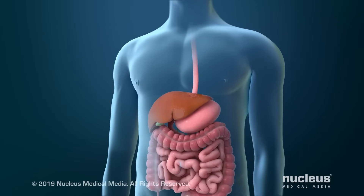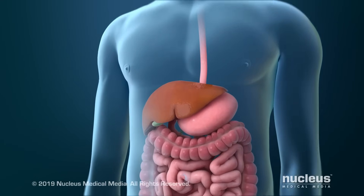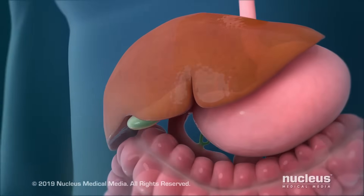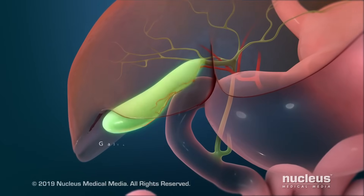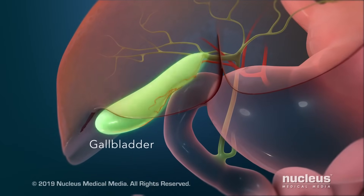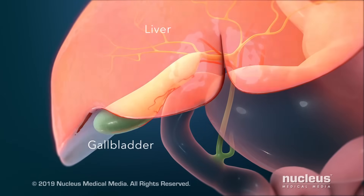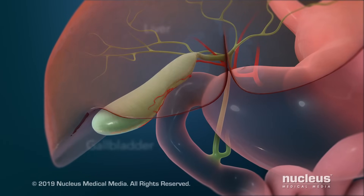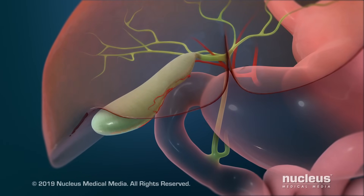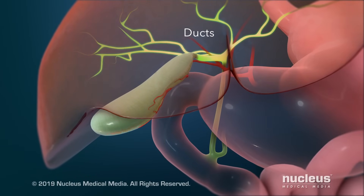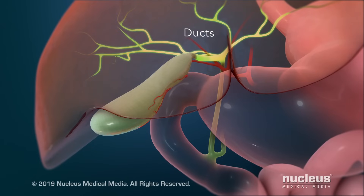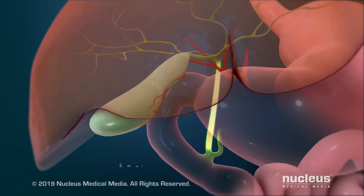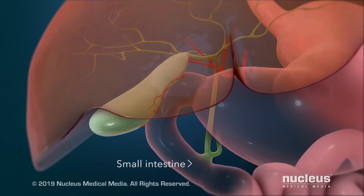An open cholecystectomy is a surgical procedure to remove your gallbladder through a large incision in your abdomen. Your gallbladder is a pear-shaped pouch underneath your liver. Your liver and gallbladder have small tubes coming out of them, called ducts.